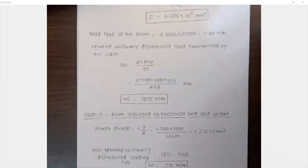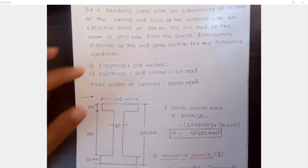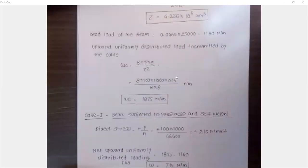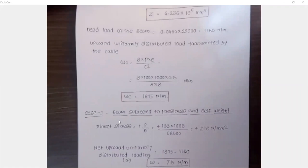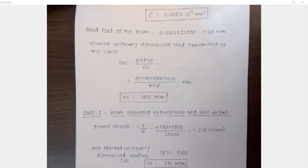Case 1: Beam subjected to prestressing force and self-weight. First, calculate the direct stress P/A. The prestressing force converted to Newtons divided by the cross-sectional area of 46,400 mm² gives a direct stress of +2.16 N/mm² (compressive). The net upward UDL is 1,875 N/m from the cable minus 1,160 N/m dead load, giving a net upward load.